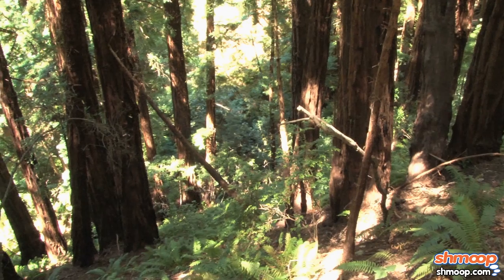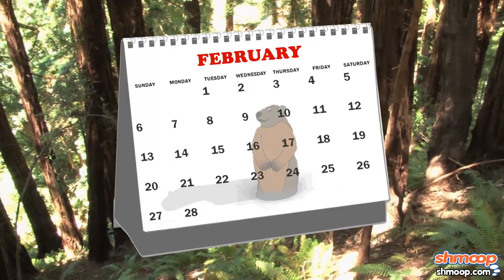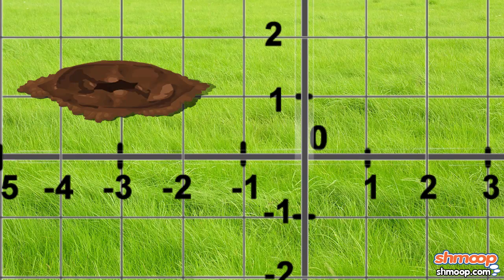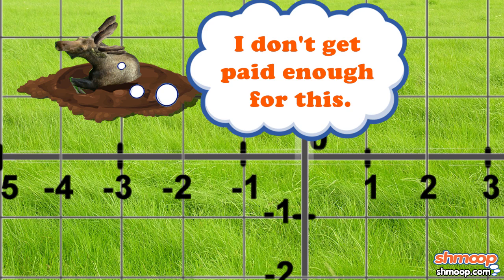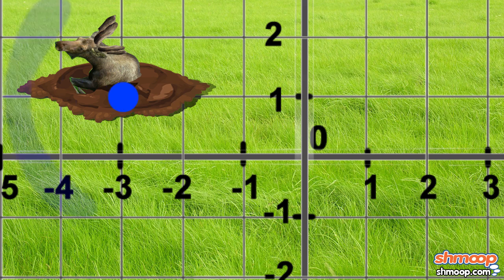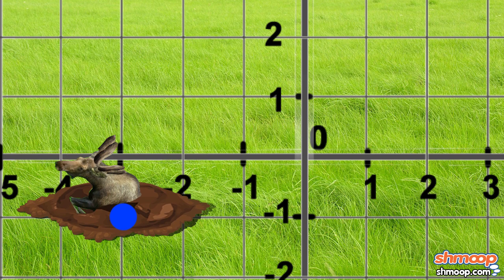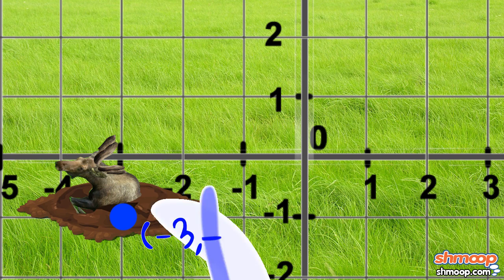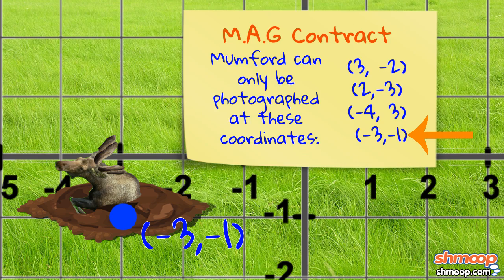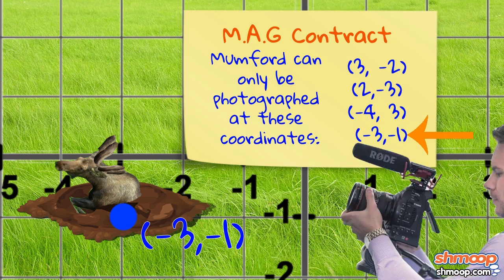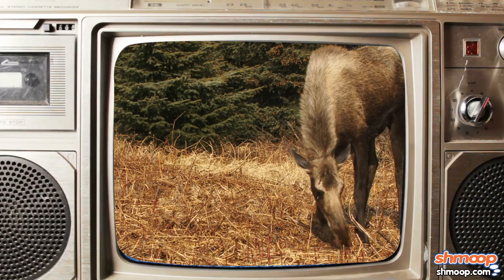Last one. It's Mr. February — Mumford the Groundhog. Will he see his shadow? Nope, he's in the wrong spot again. He'll have to move two spaces down to be in the right area. (-3, -1). Okay, we're good.